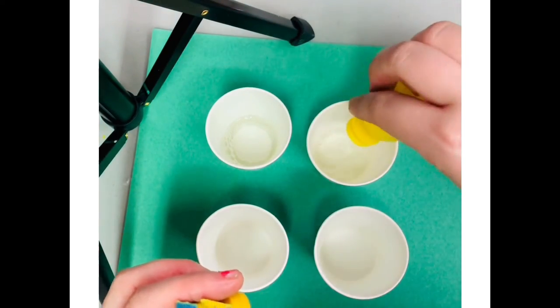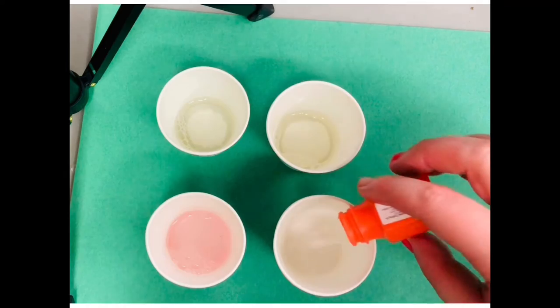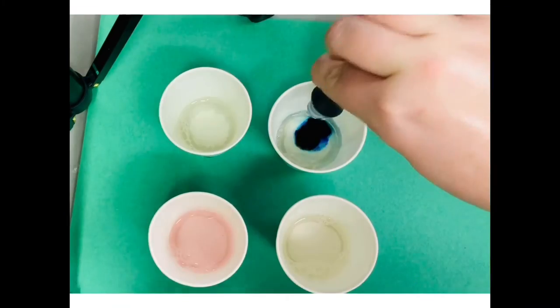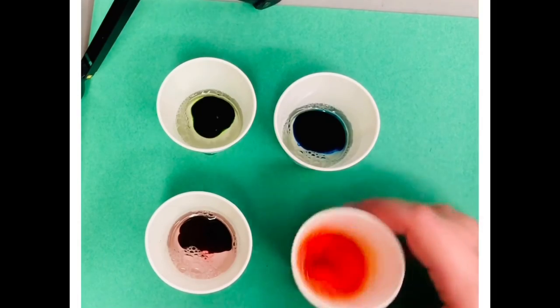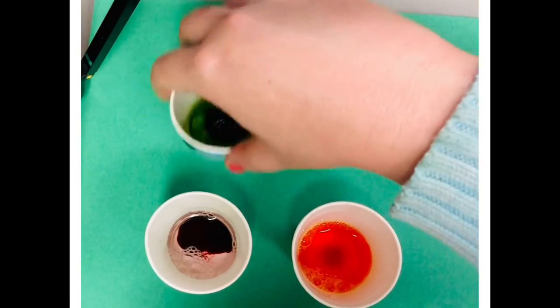I have four cups and I'm just going to pour some bubble solution in each of them. This is some pre-made bubble solution and then I'm going to add some food coloring into each of them and then just shake it up or mix up the colors.